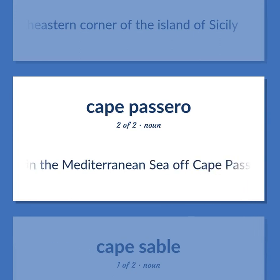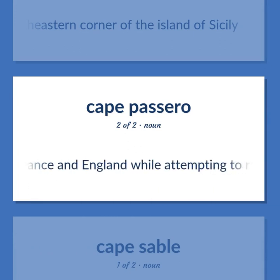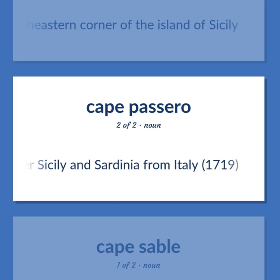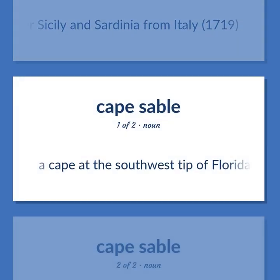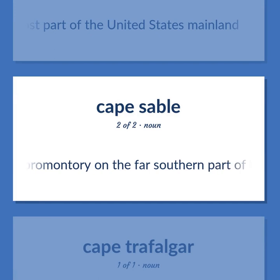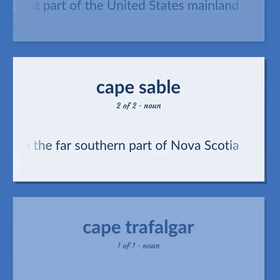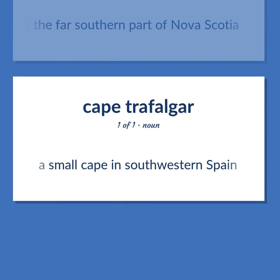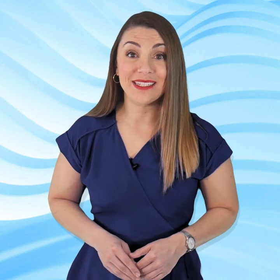A naval battle in the Mediterranean Sea off Cape Passero, in which the Spanish Navy was destroyed by France and England while attempting to recover Sicily and Sardinia from Italy, 1719. A cape at the southwest tip of Florida — the southernmost part of the United States mainland. A promontory on the far southern part of Nova Scotia. A small cape in southwestern Spain. Subscribe to our YouTube channel to become part of our growing community and learn English effectively.